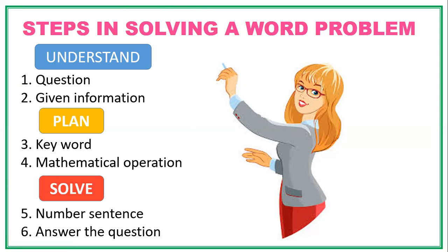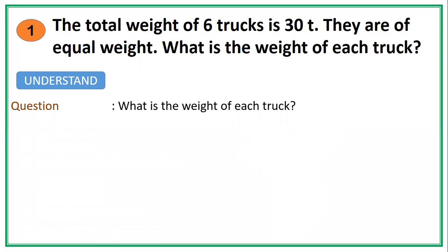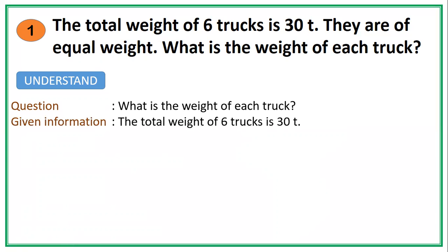Example number one: the total weight of six trucks is 30 tons. They are of equal weight. What is the weight of each truck? Let us understand the word problem. The question being asked is: what is the weight of each truck? The given information is that the total weight of six trucks is 30 tons, and each truck has the same weight.